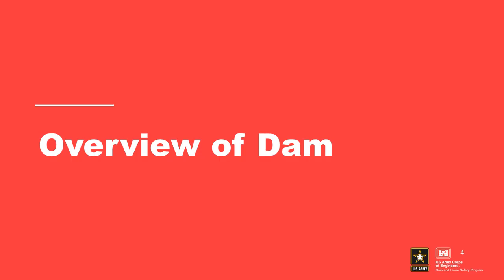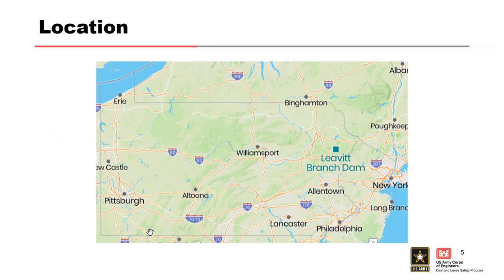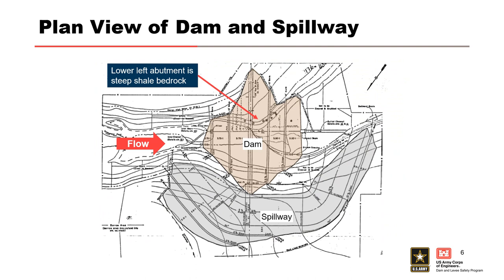First, an overview of the dam. U.S. Soil Conservation Service, now NRCS, dam PA-463 Broadhead Dam, also known as Levitt Branch Dam, is located in north central Pennsylvania in Monroe County. The project is a dry dam that helps regulate the flow of the Levitt Branch, one of the headwaters of Broadhead Creek, and impounds 1,544 acre-feet.